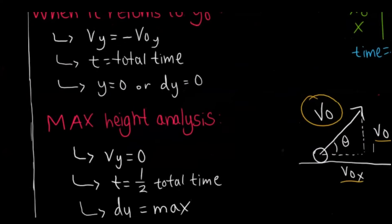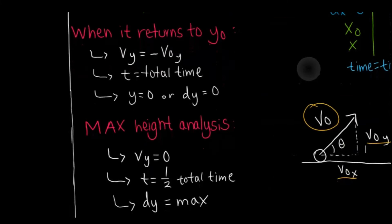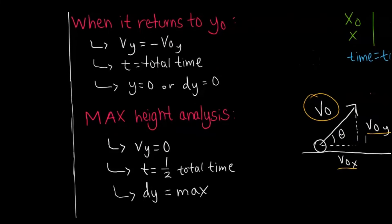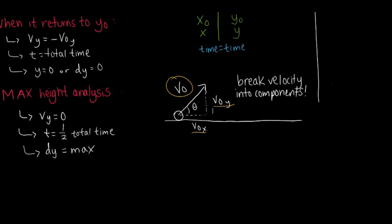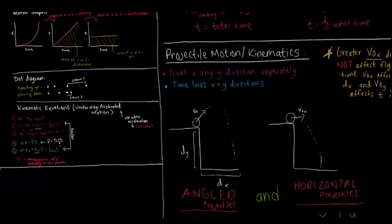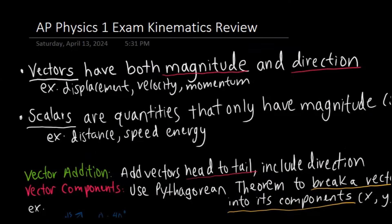Here's a quick breakdown of the different ways to analyze an angled projectile. When it comes back down to its initial Y position — like the up-and-down problems — the final velocity Y equals the negative of the initial velocity Y, total time applies, and displacement is zero. When analyzing up to max height, the velocity is zero at the apex, time is half the total, and displacement is maximum. That does it for the AP Physics 1 review for kinematics. There are going to be some questions linked above — I recommend you check those out, and thank you for watching.